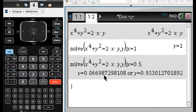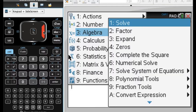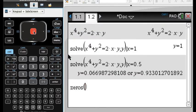But what we'd like to do is plot this. Well, there's another command called zeros that doesn't write this as y equals. It actually just lists the values. So if I go to menu and I go down to algebra, and I go down to this command called zeros, I can do this.